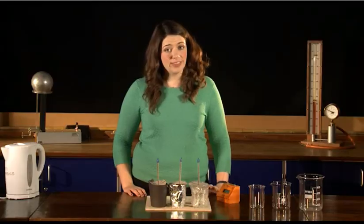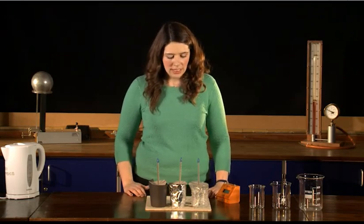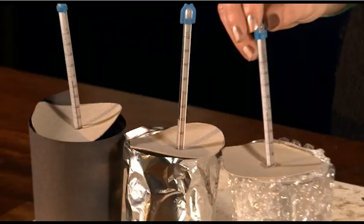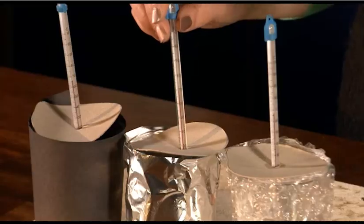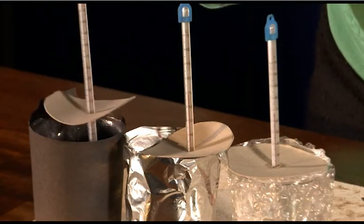The experiment's been running now for about 10 minutes, so we can check our temperatures and see how much they've changed. If I look at the bubble wrap, that's gone down to 68 degrees Celsius. If I look at the tinfoil, that's gone to about 70 degrees Celsius. And if I look at the black paper, that's gone to about 66 degrees Celsius.